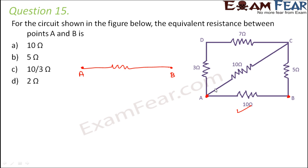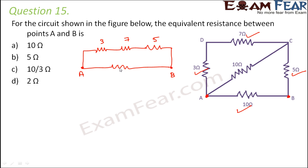This is point A and this is point B. Between points A and B, we have a 10 ohm resistance. Also between A and B, we have 3 ohms linked to 7 ohms linked to 5 ohms — these three resistances are connected end to end. And there is a 10 ohm resistance between A and C, where C is a point between the 7 ohm and 5 ohm resistances.